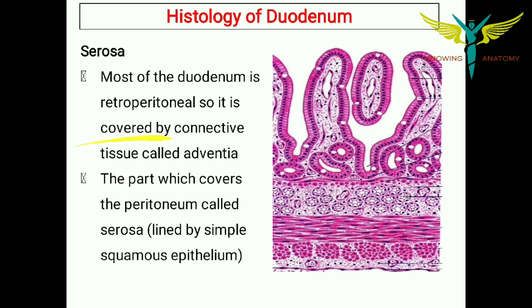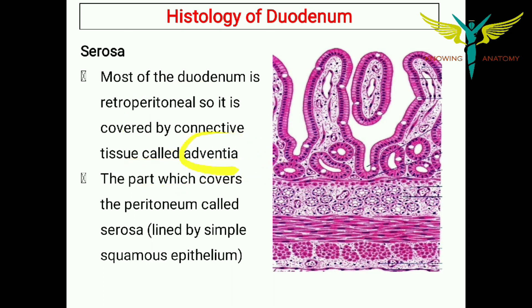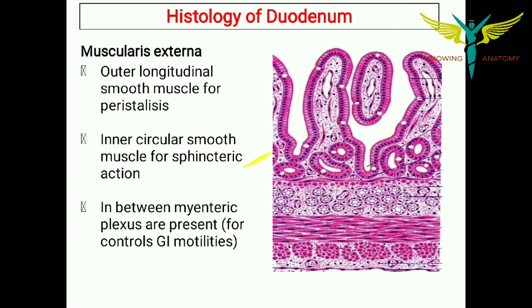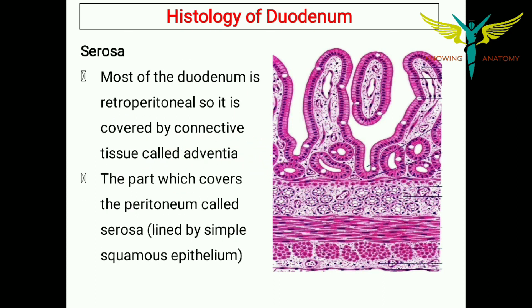Coming to the fourth layer — the serosa. Most of the duodenum is retroperitoneal, so it is covered by connective tissue called the adventitia. The part which covers the peritoneum is called the serosa, which is lined by simple squamous epithelium.